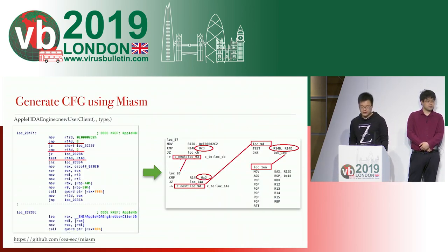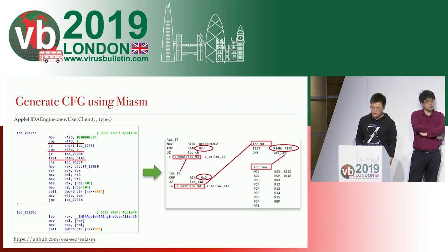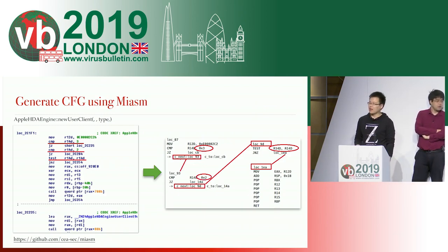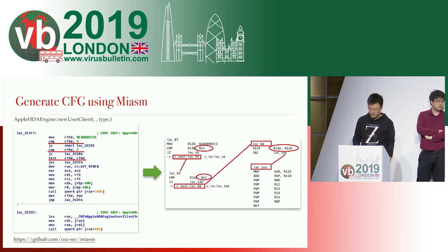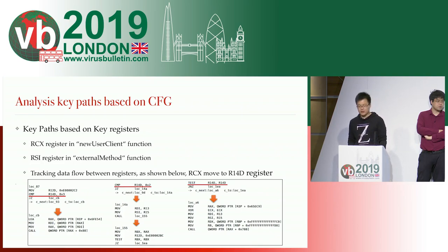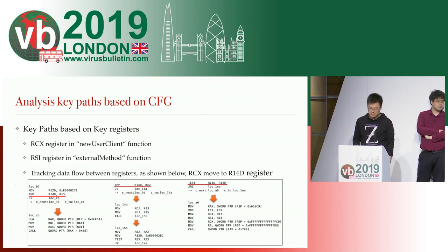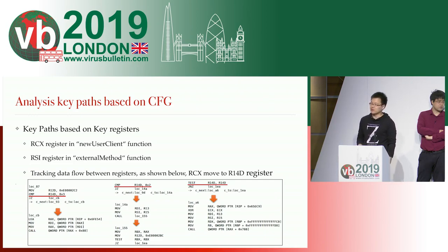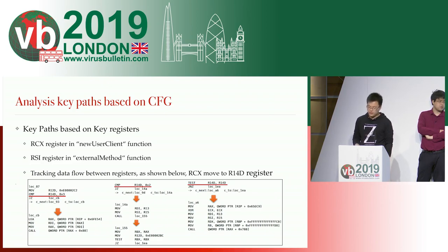This is a code snippet from Apple's IOAudioDevice HDA agent newUserClient function. The right screenshot is the CFG generated by Miasm. We can see that it has three connection types, including zero to three. As mentioned before, we only care about certain registers' data flow. In this example, it's the R14D register. This register is pointing to the connection type register, which is the fourth parameter of the newUserClient function. For the external method, it is the same. After getting the branching using CFG, all we need to do is analyze them to get the related user client information or external method information.